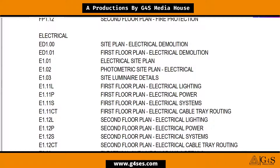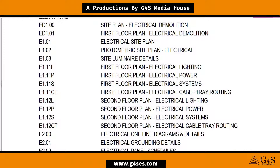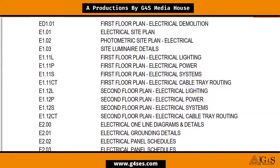The third drawing is the electrical site plan, where new work for the site will be shown. Similarly, there are other drawings: First Floor Plan Electrical Lighting, First Floor Plan Electrical Power, First Floor Plan Electrical Systems, First Floor Plan Electrical Cable Tray Routing, and the same types of drawings for the second floor plans.